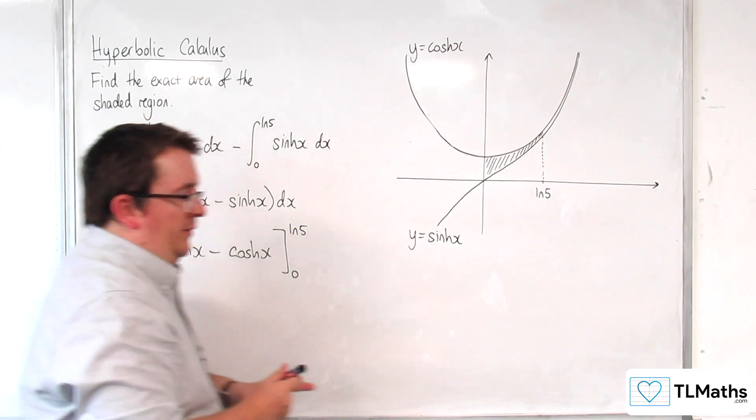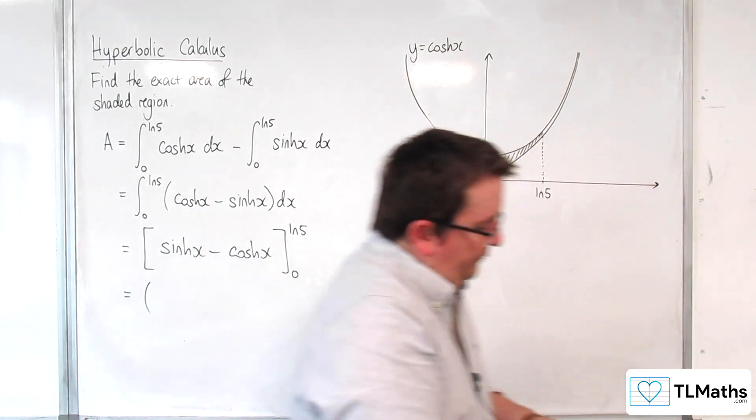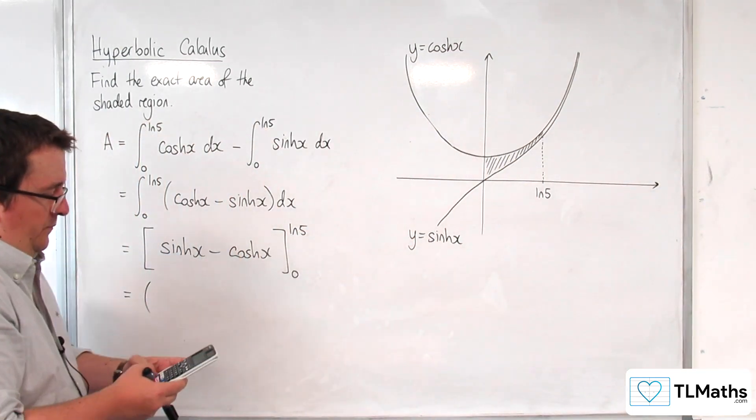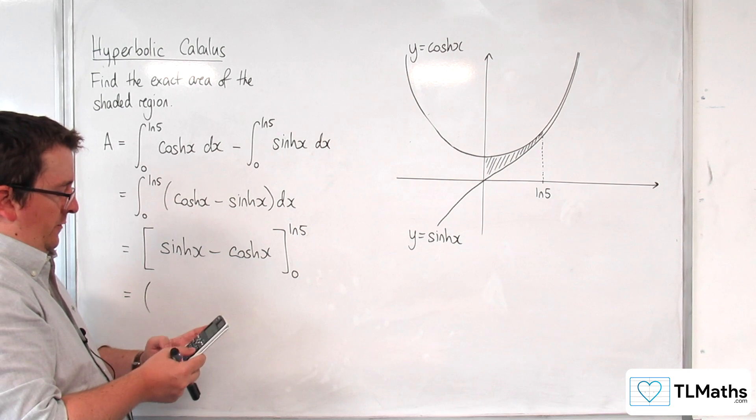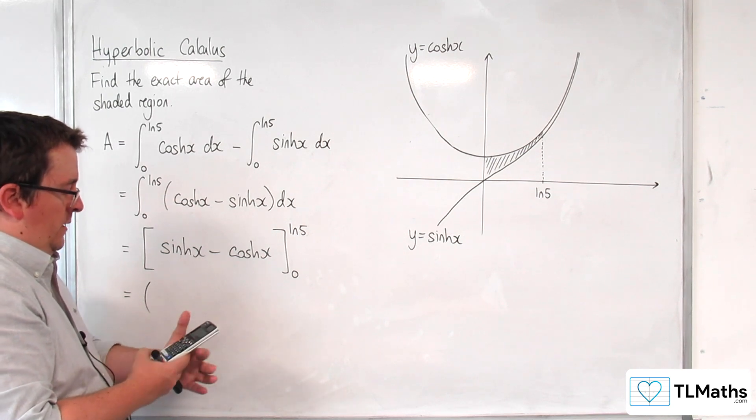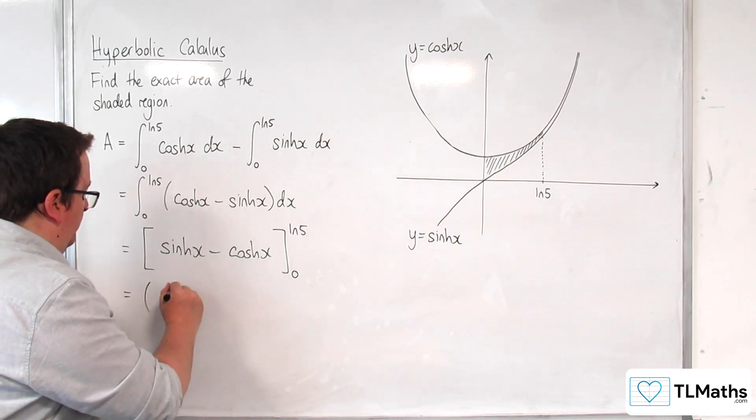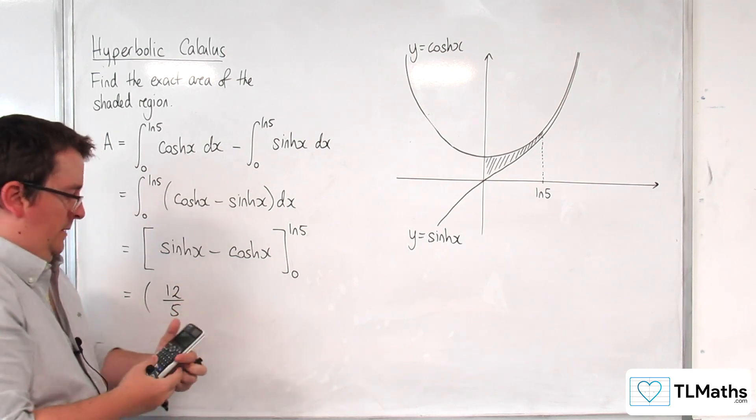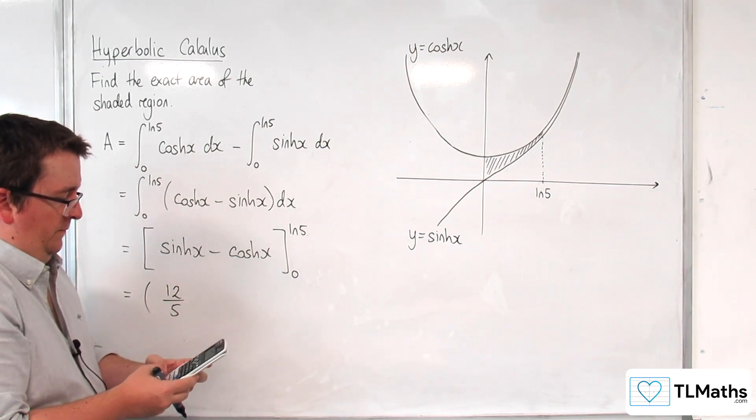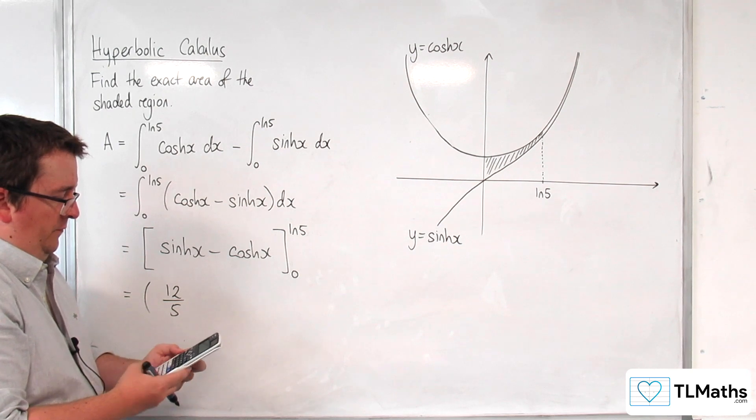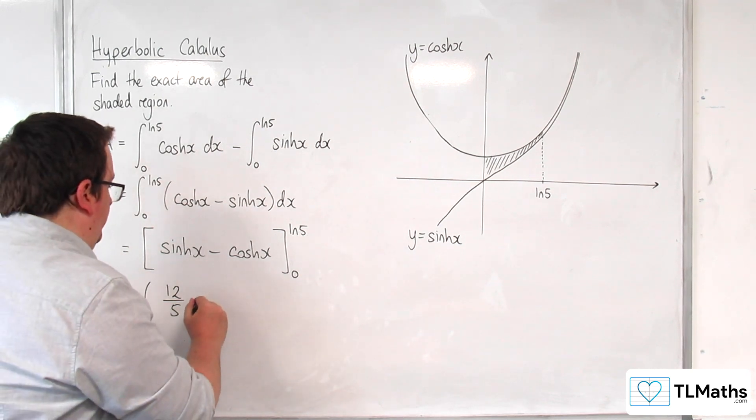So now we start substituting in. So sinh of log 5 is 12 fifths. And cosh of log 5 is 13 fifths.